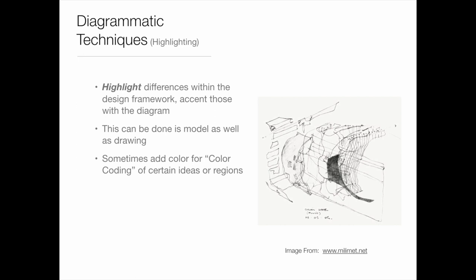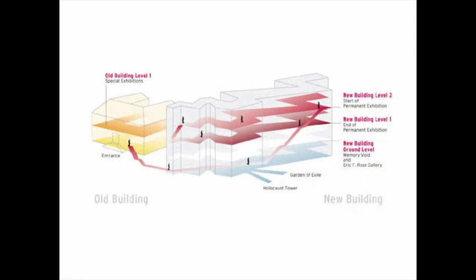Moving on to the next technique: highlighting. The key here is that we're highlighting something different within the design framework—accenting something specific, drawing your attention to it. It can be done in a model as well as in a drawing, and sometimes people just add color, which is essentially color coding. Here we have an example with the old building in yellow, new building in white, and the upper two floors in red—they draw my attention. I can tell that's important just because of the diagram.